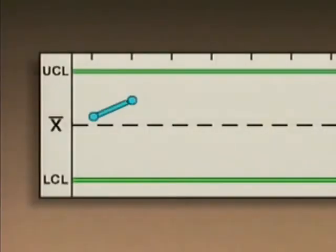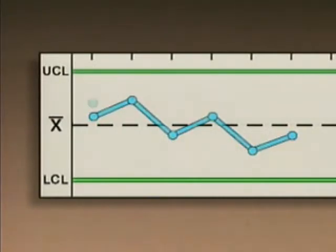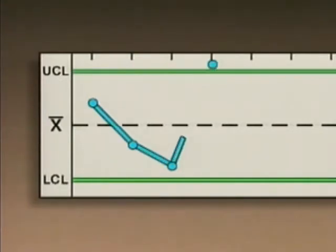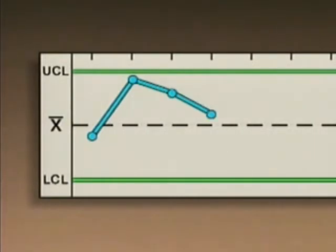A process is in control when no abnormal variation is present. The plotted values of an in-control process typically fall in a random pattern around the process centerline on a control chart. An out-of-control process usually has some abnormal variation that causes plotted values to fall outside of the control limits. However, sometimes process values remain within the control limits even though abnormal variation is present.